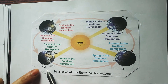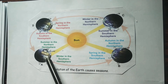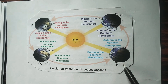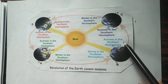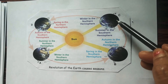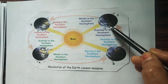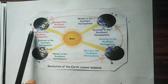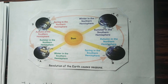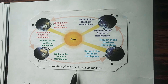In figure A, during June, it is summer in the Northern Hemisphere and winter in the Southern Hemisphere. In figure B, it is autumn in the Northern Hemisphere and spring in the Southern Hemisphere. In figure C, it is winter in the Northern Hemisphere and summer in the Southern Hemisphere. In figure D, it is spring in the Northern Hemisphere and autumn in the Southern Hemisphere. The revolution of the Earth causes seasons.